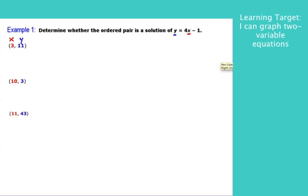I'm going to plug that in and see if those values work. So I plug in 11 for Y and 3 for X. This is just like a check step, just like you did with single variable equations. Just do all the work, and we're going to see if the two sides are equal.